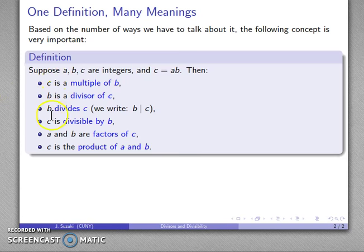And so that's one, two, three, four, five, six ways we can talk about the relationship. Actually, there's even more because commutativity still holds. If c is equal to a times b, then c is also equal to b times a. So that c is a multiple of a. a is a divisor. a divides. c is divisible by a. And so on. So that puts us up to four, eight, nine, ten different ways we can describe this relationship.